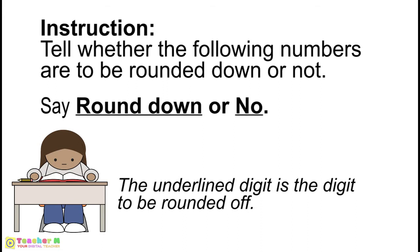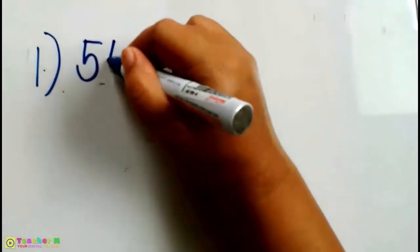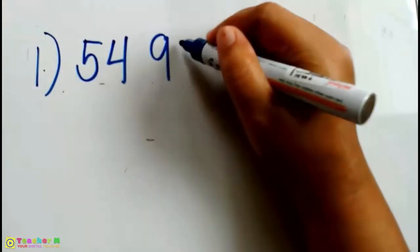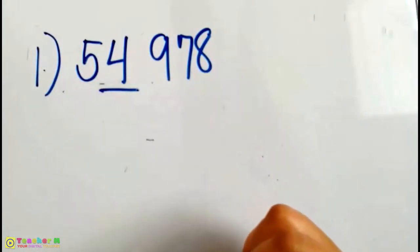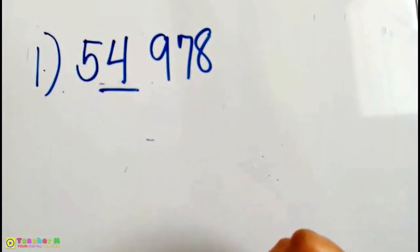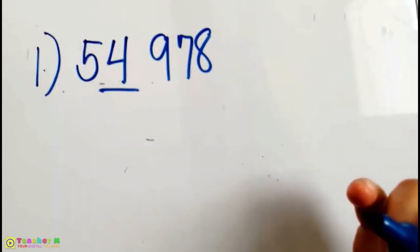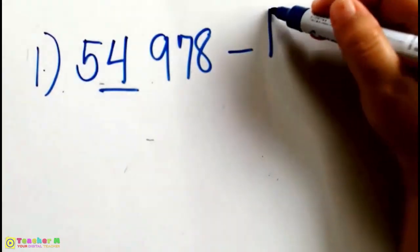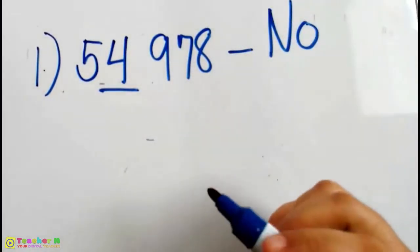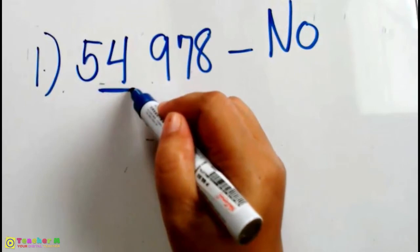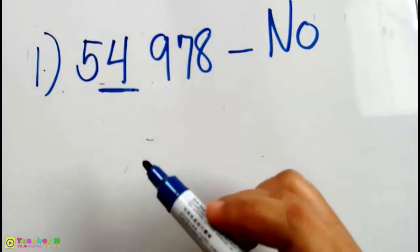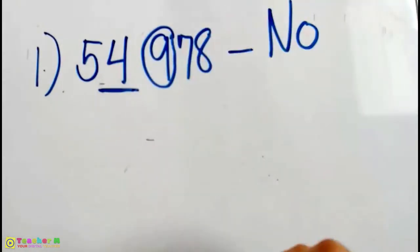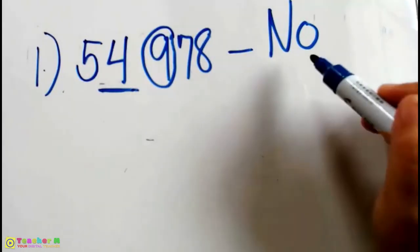Number 1: The number is 54,978, and the underlined digit here is 4. Are we going to round this number down or no? The answer is no. Why? Because the underlined digit here is 4, and 4 is followed by 9. Therefore, we are not going to round this number down. The answer is no.